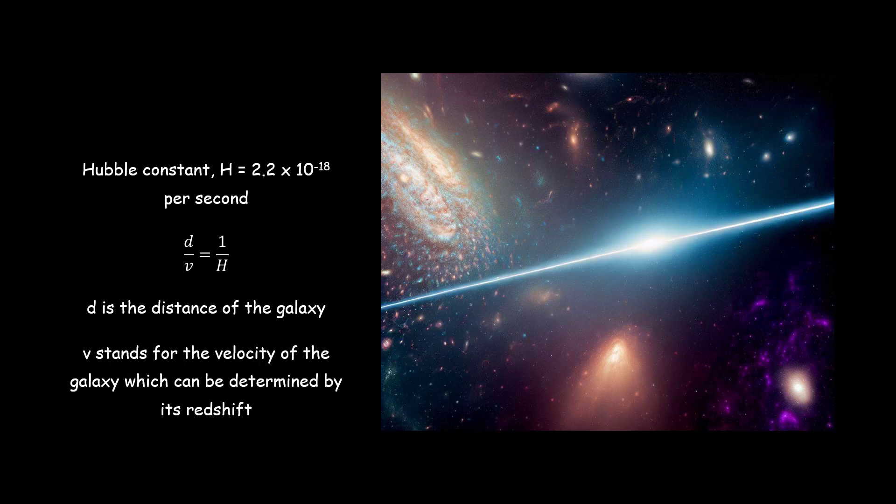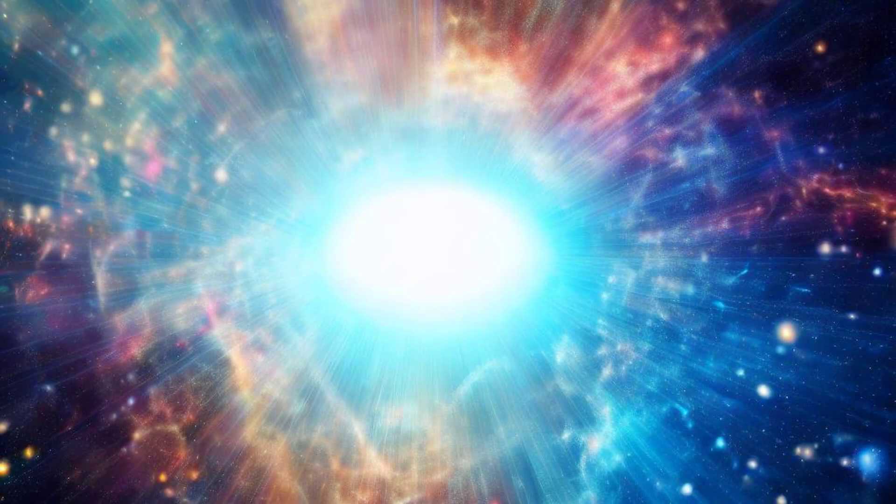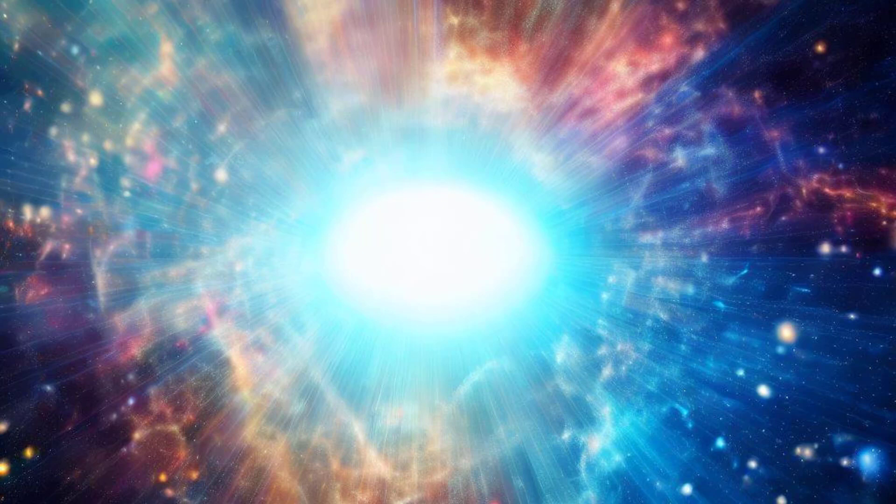By studying redshift in the light from galaxies and measuring their distances, astronomers can determine their speeds and distances. The Hubble constant, denoted as H, represents the ratio of a galaxy's speed away from Earth to its distance from Earth. Currently, the estimate for the Hubble constant, H, is approximately 2.2 times 10 to the power of negative 18 per second. The relationship between distance, D, and velocity, V, can be expressed as D divided by V equals 1 divided by H. This equation provides a means to estimate the age of the universe, supporting the notion that all matter in the cosmos originated from a single point.